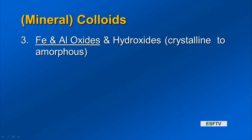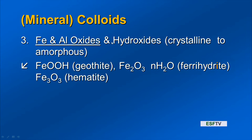Iron and aluminum oxides and hydroxides are kind of missing silica. This group includes goethite, FeOOH, which gives soils their brown color; ferrihydrite, which also gives soils a brown color; and hematite, which gives those red colors. So these are iron oxides and iron hydroxides.